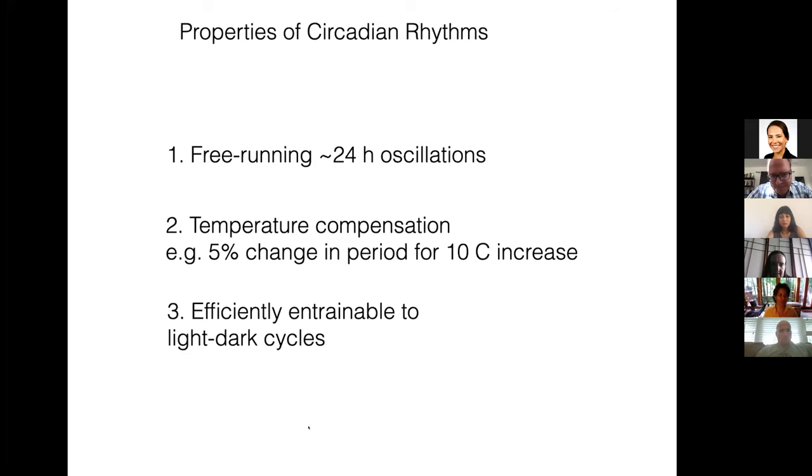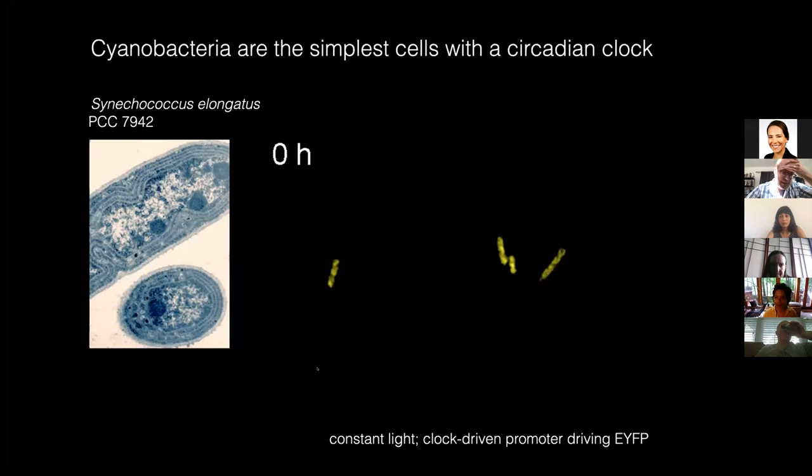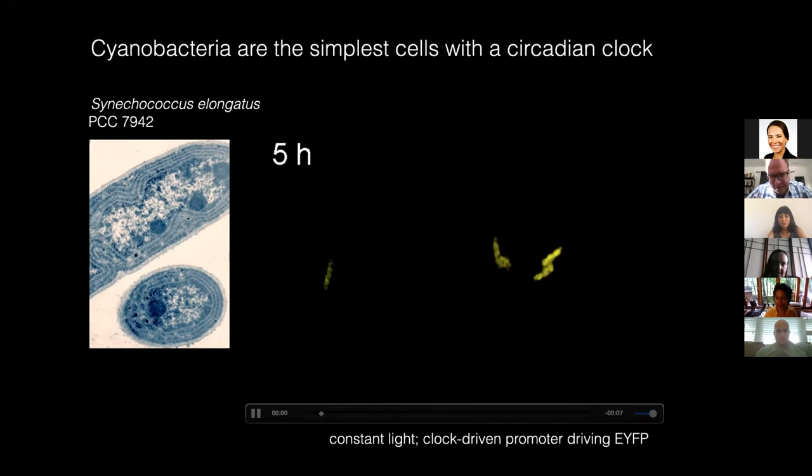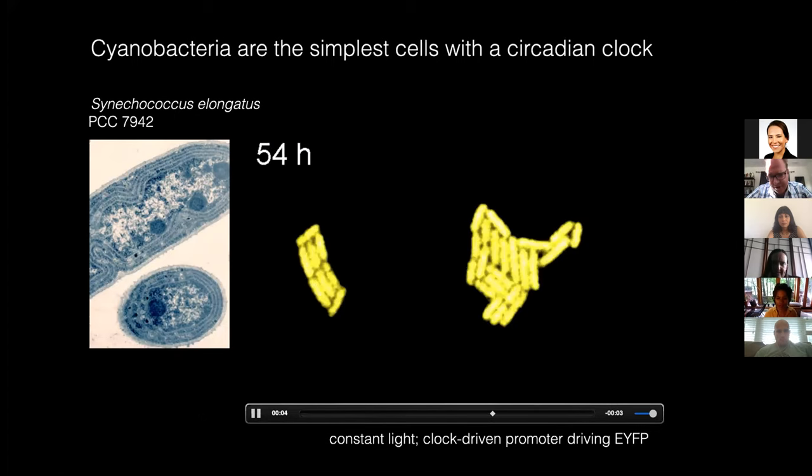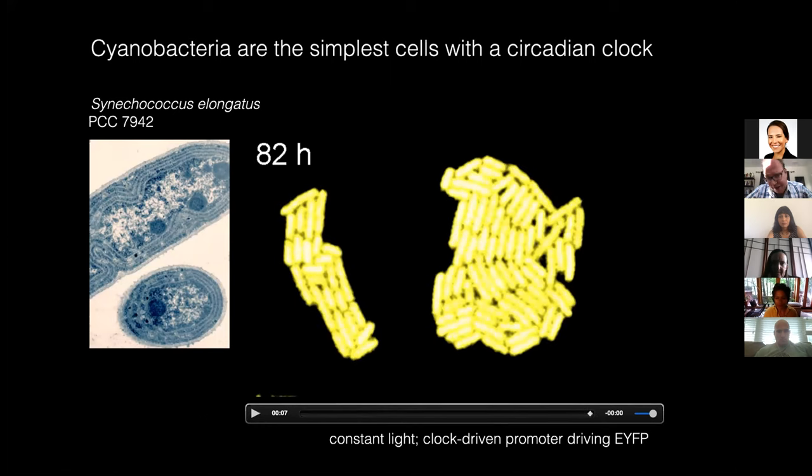And the third criteria is that it's supposed to be able to entrain or synchronize or phase lock to the external light-dark cycle caused by the rotation of the earth. The system I've become quite fascinated by is really the simplest example of a circadian rhythm system, and it comes from bacteria. It comes from this photosynthetic bacteria called Synechococcus elongatus. I'll show you a movie. This is cells growing in a constant environment with a yellow fluorescent protein expressed from a clock promoter. You can see that even though they're doubling faster than a day, and the environment is not changing, they have this daily rhythm in expression of this protein.